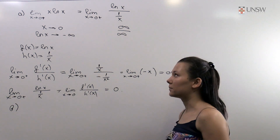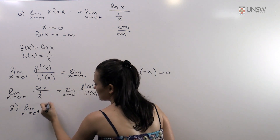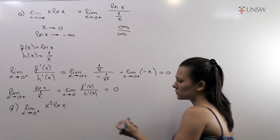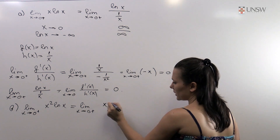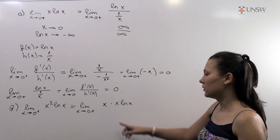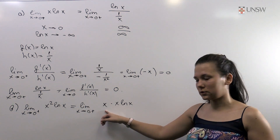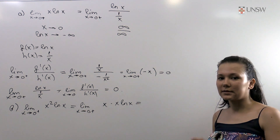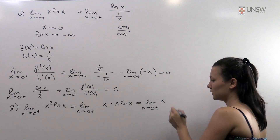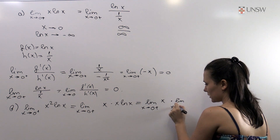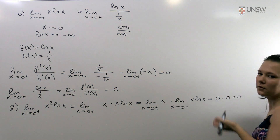Now Part b. In Part b we need to find a slightly different limit: again the limit as x goes to zero from the right, but now of x²·ln(x). We can write this as x times x·ln(x). Now x·ln(x) by Part a goes to zero, and x also goes to zero. Since both limits exist and are finite, we can split it into two parts: the limit of x times the limit of x·ln(x), giving zero times zero, which is of course just zero.